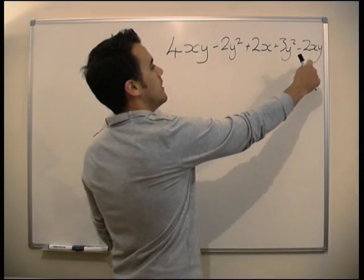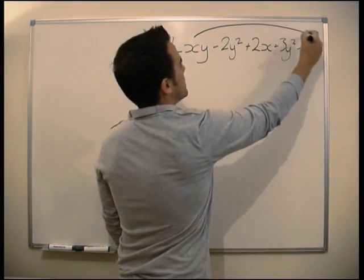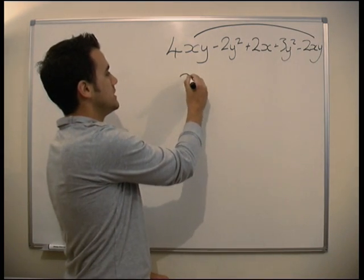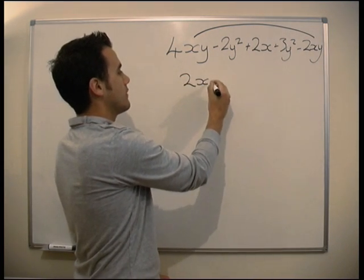So 4xy minus 2xy, those two are linked. Okay, so 4xy minus 2xy, 4 minus 2 is 2, so we get 2xy.